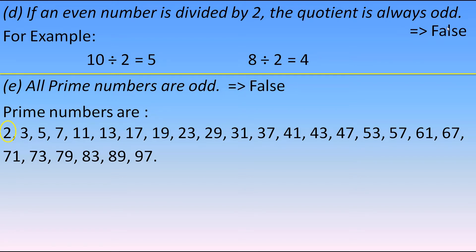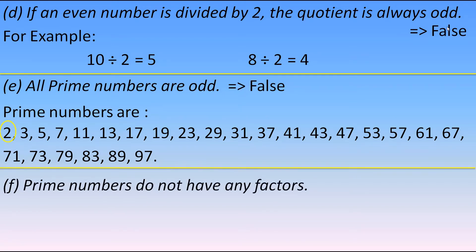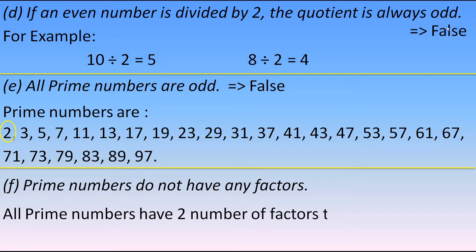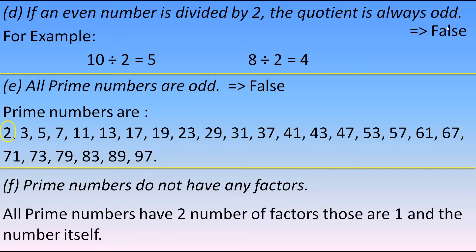Next statement: prime numbers do not have any factors. As explained in my last video, all prime numbers have exactly two factors — 1 and the number itself. So this statement is false.